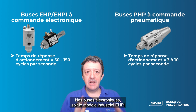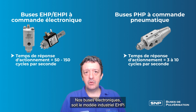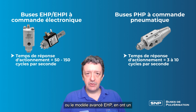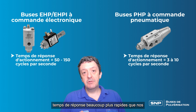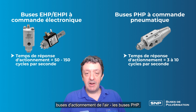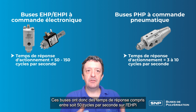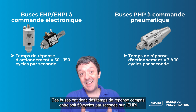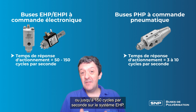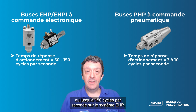Our electronic nozzles, either the EHPI industrial model or the EHP advanced model, have much faster response times than our air actuated nozzles. These have response times of between 50 cycles per second on the EHPI, or up to 150 cycles per second on the EHP system.